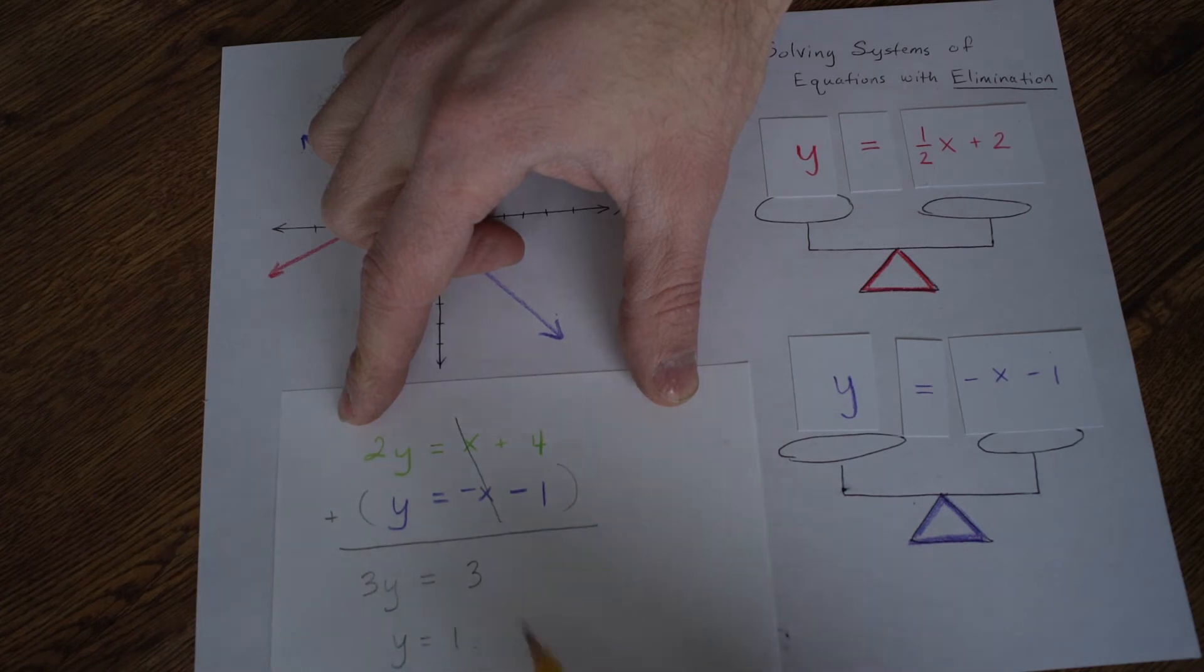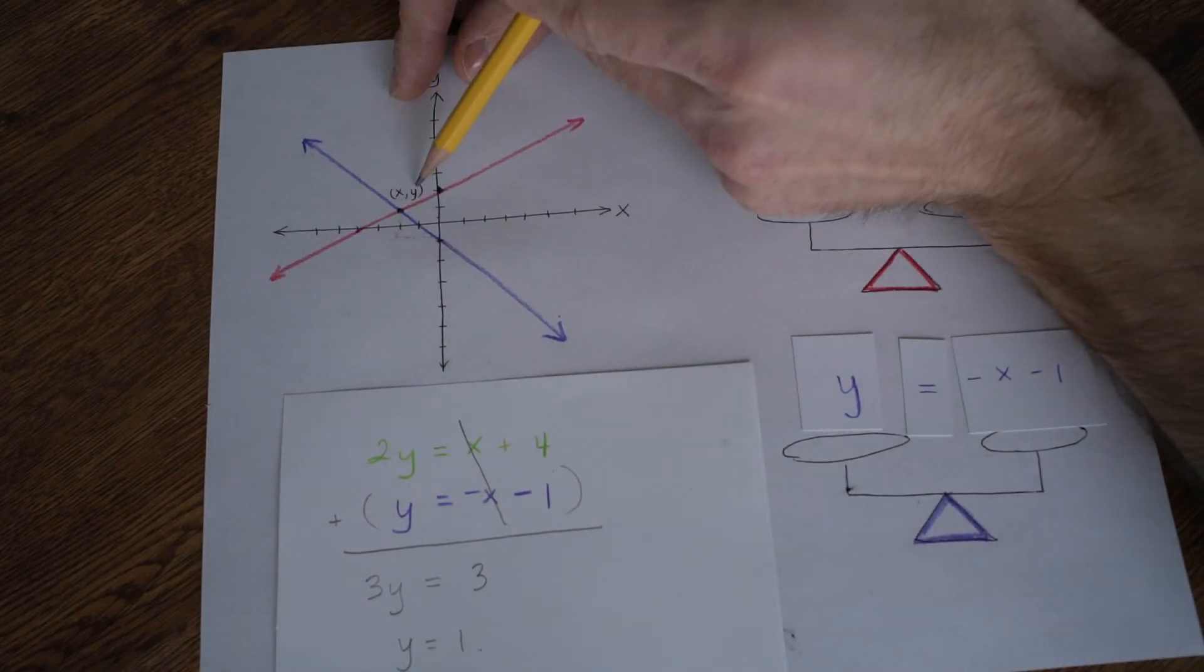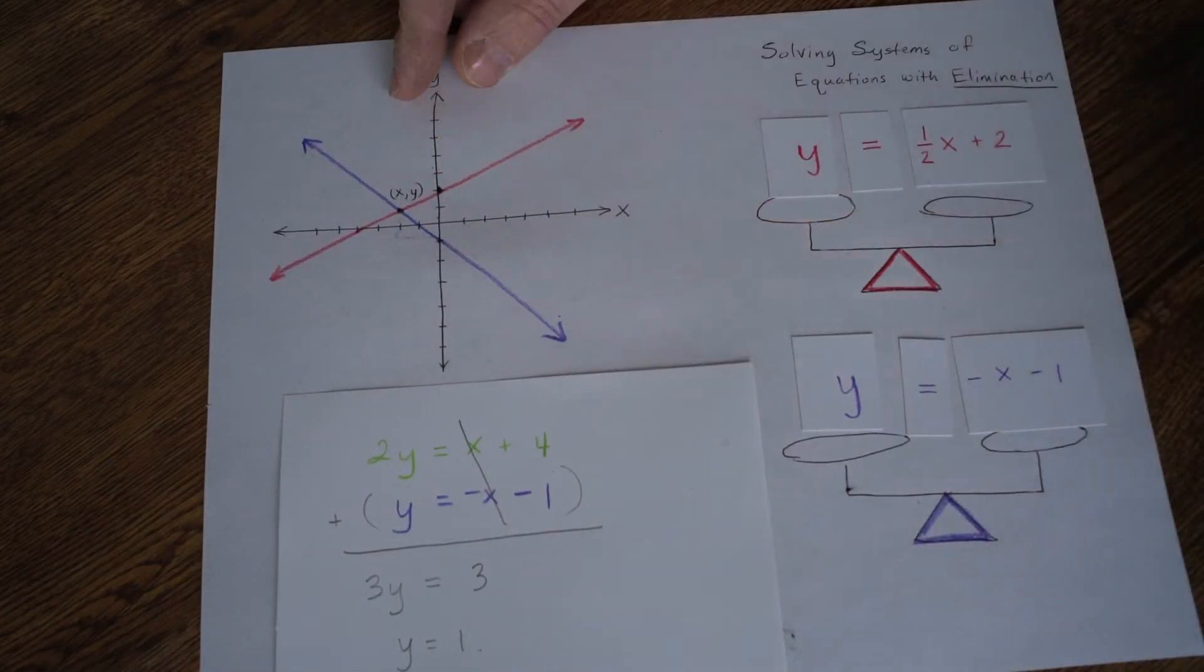But I think you can just see that that would be a 1. 1 times 3 is 3. So y equals 1. Now that checks out on our graph. We know that the height where they cross is 1. And we used elimination to do it.